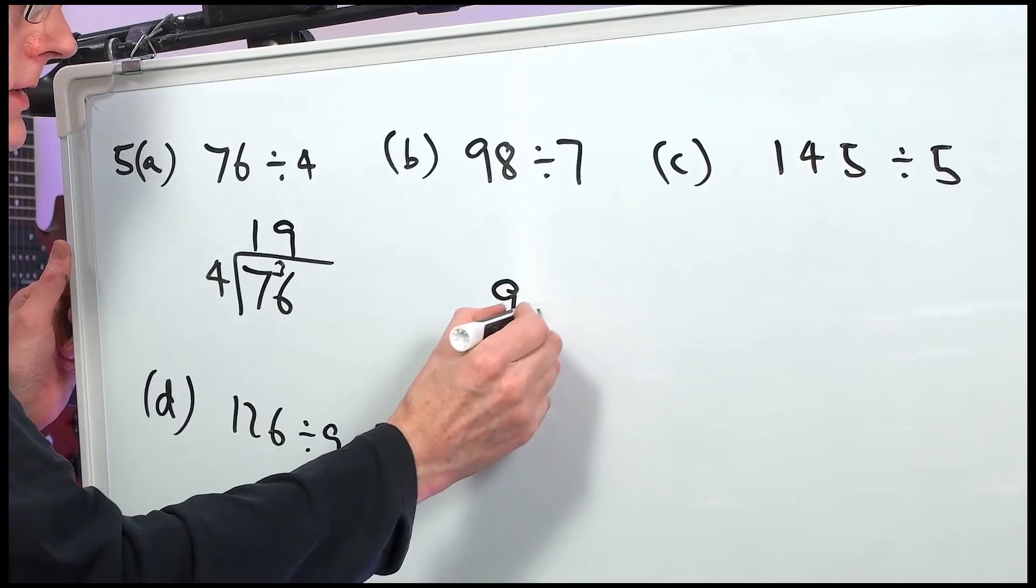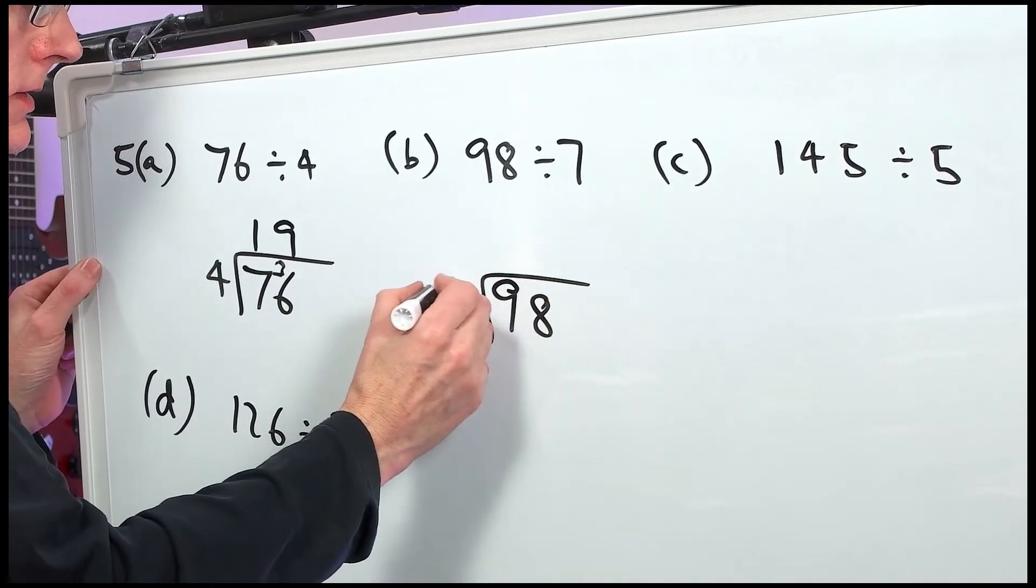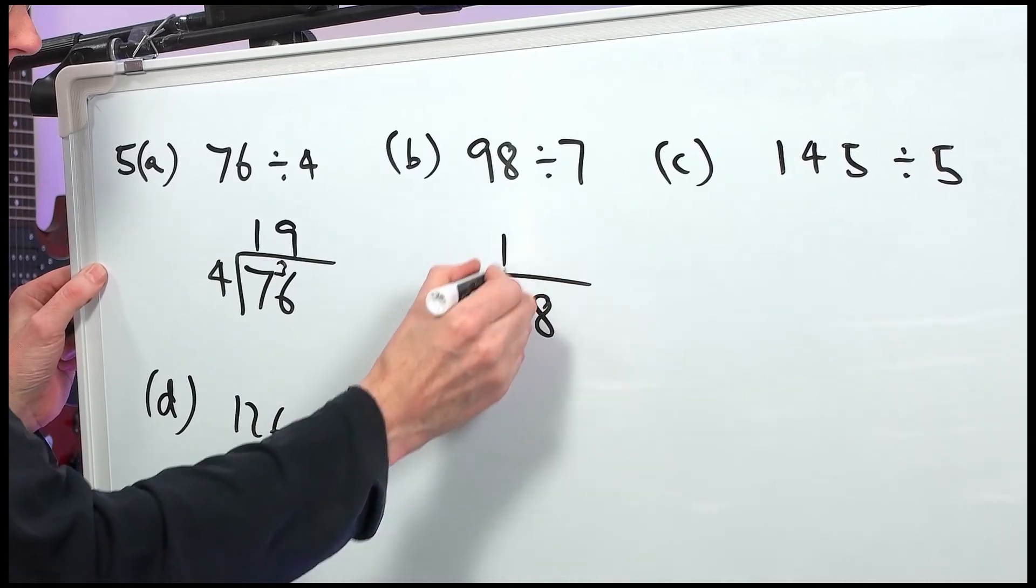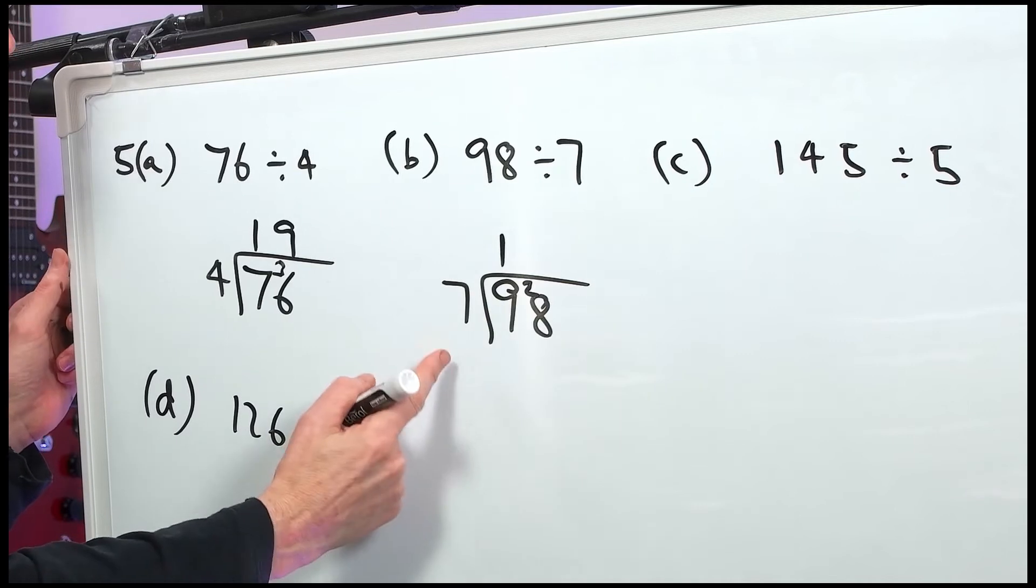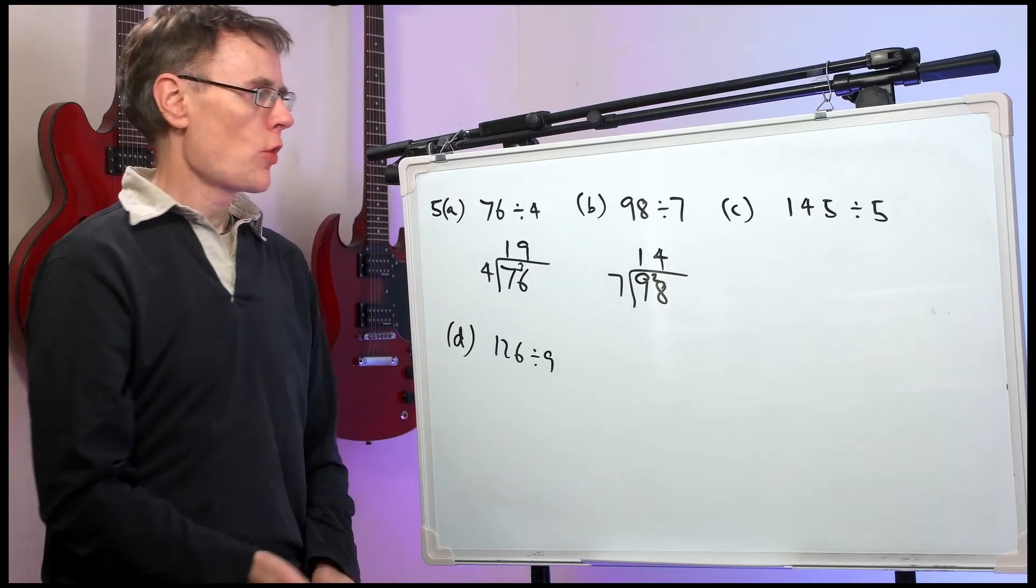Part B. 98 divided by 7. 7s into 9 go once. 7, 8, 9. So, it's remainder 2. And 7 into 28 goes 4 times. 14.